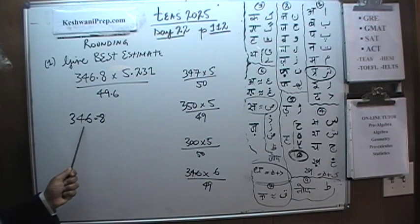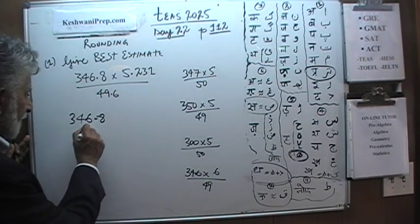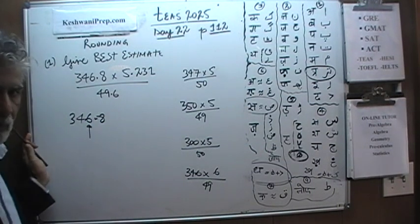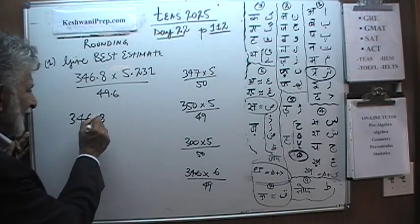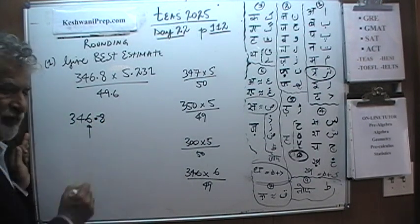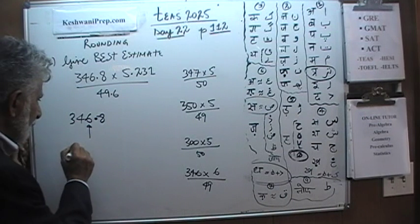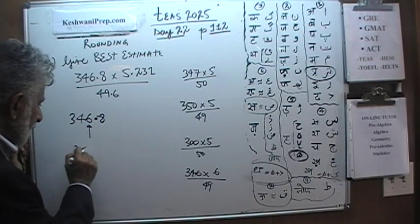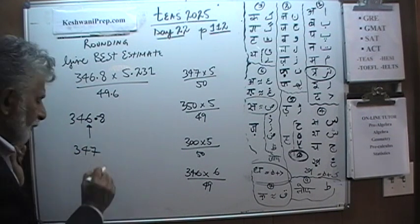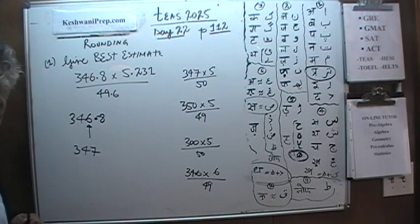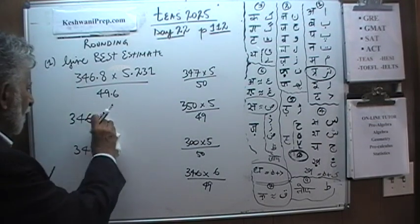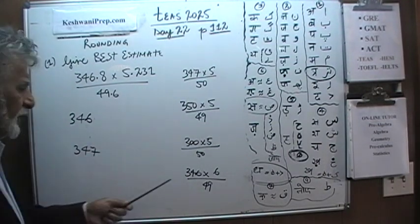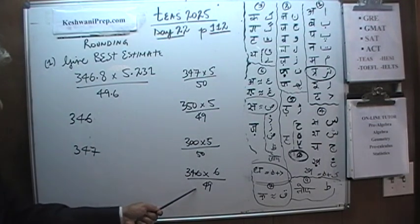If you are rounding 346.8 to the nearest unit digit — the unit digit is right here — because 0.8 is more than 5, it should have been rounded up and become 347. You can't just drop the decimal part because you don't like it.